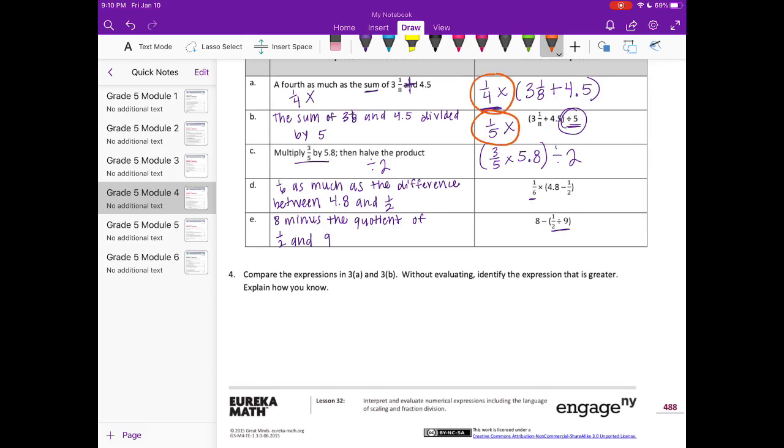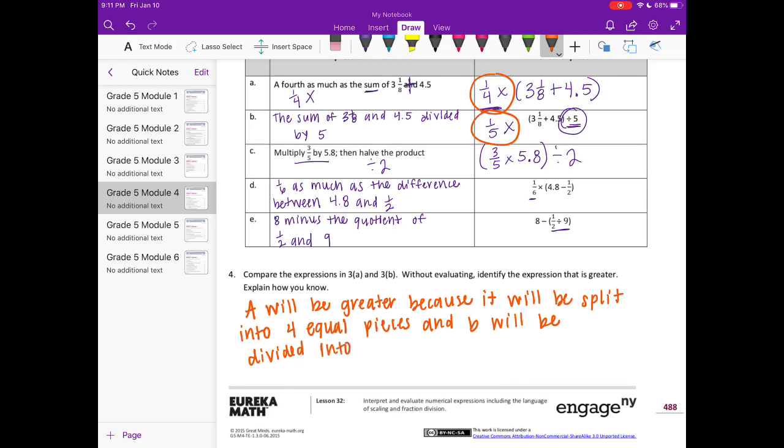So all we're determining here is which expression is greater. So if you multiply by 1 4th, it's going to be greater because a 4th of something, you'll have a bigger piece than if you split something into 5ths. So we would say A will be greater because it will be split into 4 equal pieces, and B will be divided into 5 equal parts.